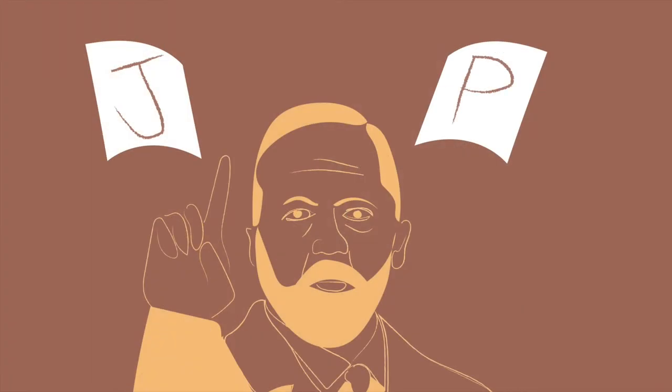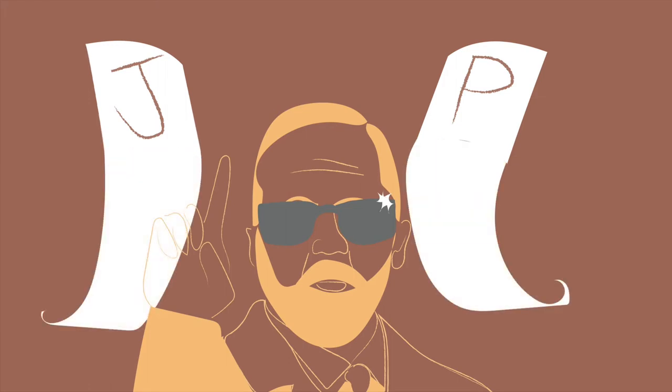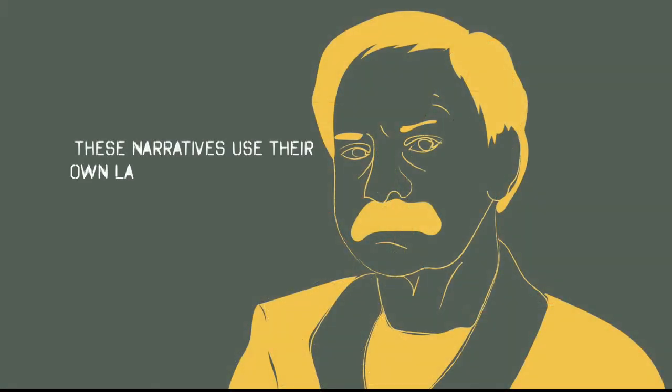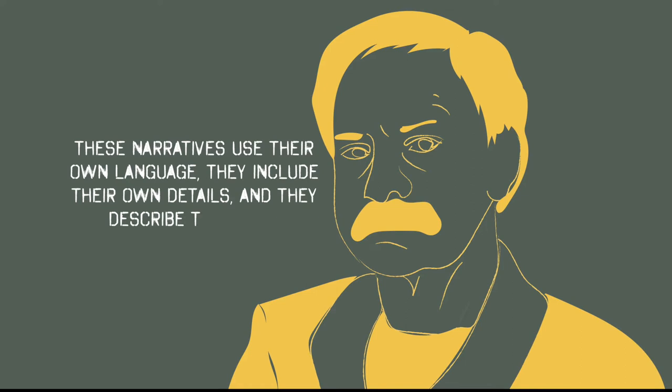The priestly source usually uses the word Elohim for the divine. Here's where it gets really cool. When you identify and divide these two sources, they read like continuous and relatively independent narratives. It's pretty impressive. And it alleviates the tension in the text. Richard Friedman says these narratives use their own language, they include their own details, and they describe their own depictions of God.